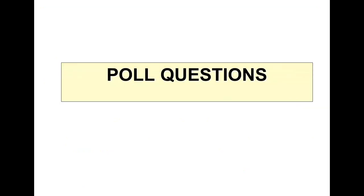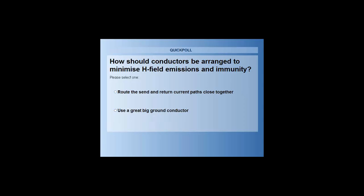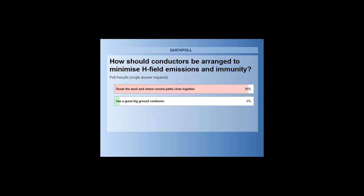A few more poll questions and then we're done. How should conductors be arranged to minimize H-field emissions and immunity — route the send and return current paths close together, or use a great big ground conductor? The majority answered A, route the send and return current paths close together — which is correct.